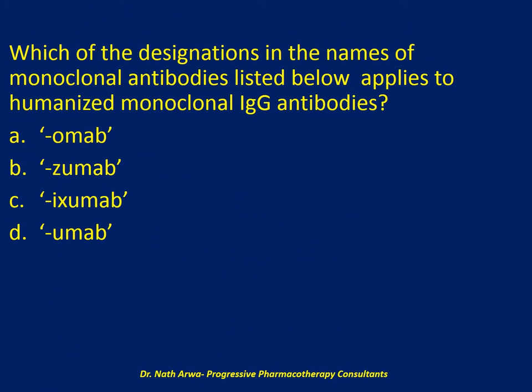The next question reads: which of the designations in the names of monoclonal antibodies listed below applies to humanized monoclonal IgG antibodies? Is it the -omab? Is it the -zumab? Is it the -ximab? Or is it the -umab? I'll give you 10 seconds to choose the correct answer.